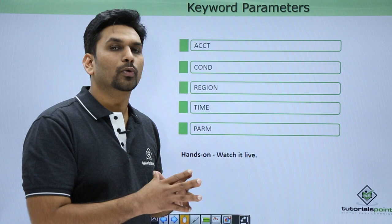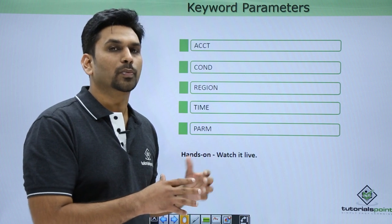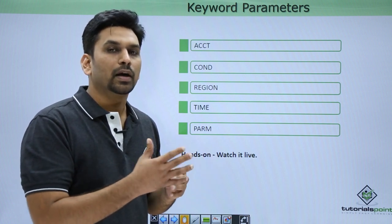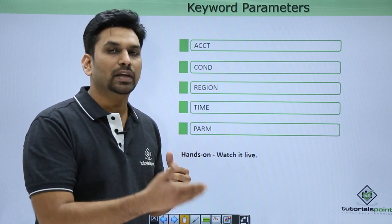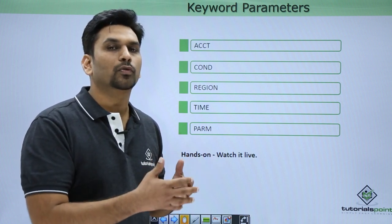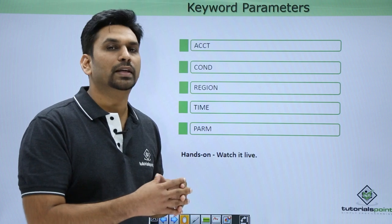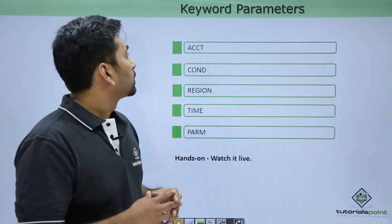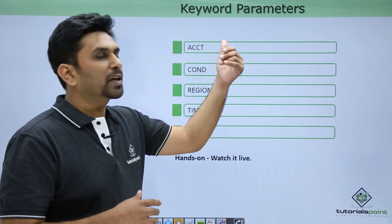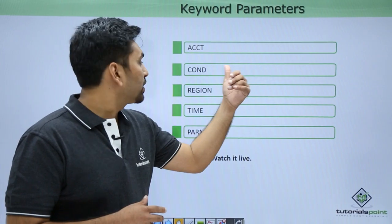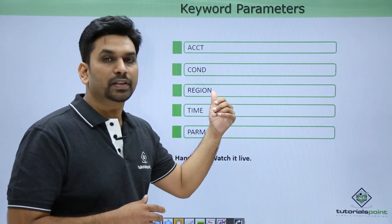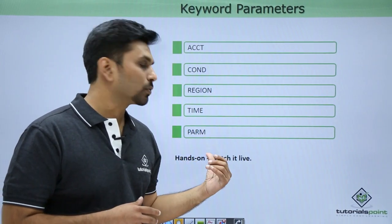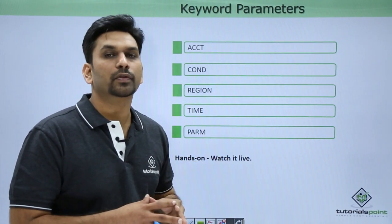We can pass values to a COBOL program using the PARM parameter. Suppose a program is expecting a date, a time, or any input from the user — that can be provided through the PARM parameter. So the keyword parameters are: ACCOUNTING, CONDITION, REGION, TIME, and PARM.